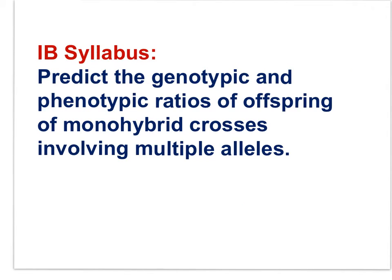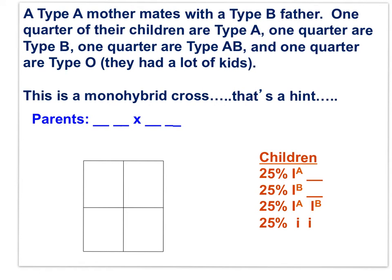The relevant IB syllabus statement: predict the genotypic and phenotypic ratios of offspring of monohybrid crosses involving multiple alleles. Here's a problem: a type A mother mating a type B father have children — one quarter type A, one quarter type B, one quarter AB, and one quarter O.